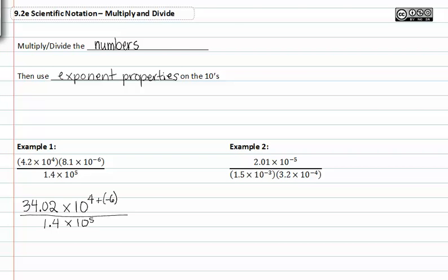Now I can take 34.02 and divide it by 1.4. When I do this, I get 24.3. Now I have to figure out my exponents. I had times 10 to the negative 2 in the numerator, and now since I have something in the denominator, I have to subtract it.